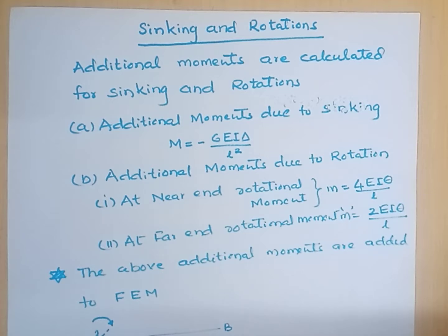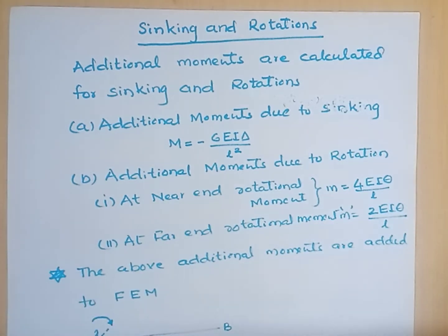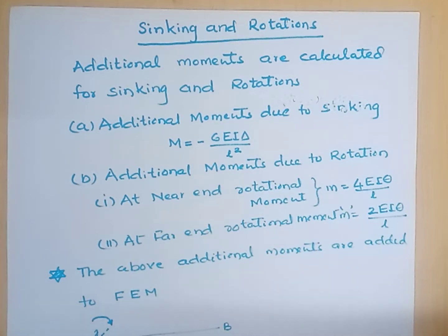In sinking and rotation of the supports, we have to calculate the additional moments. The additional moment required due to the sinking of the support is: m equals minus 6EI delta by L squared. This comes from the slope deflection equation — the general expression for the slope deflection equation.